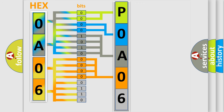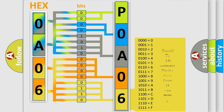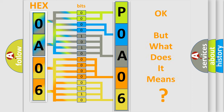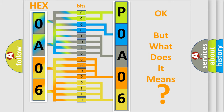A single byte conceals 256 possible combinations. We now know in what way the diagnostic tool translates the received information into a more comprehensible format. The number itself does not make sense to us if we cannot assign information about what it actually expresses. So, what does the Diagnostic Trouble Code POA06 interpret specifically for Infiniti car manufacturers?